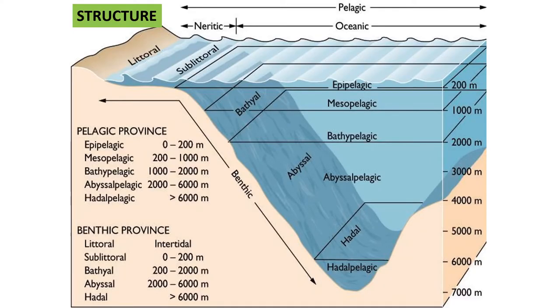At first we will see the structure of the ocean. If we look at the structure of the ocean, it is divided into two parts: basically the Pelagic province and the Benthic province. The Pelagic zone is also divided into two parts — the Neritic zone and the Oceanic zone.